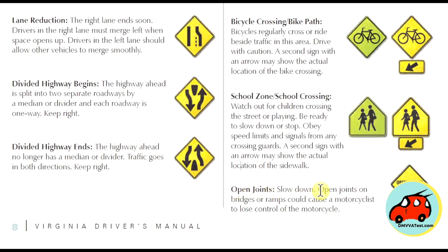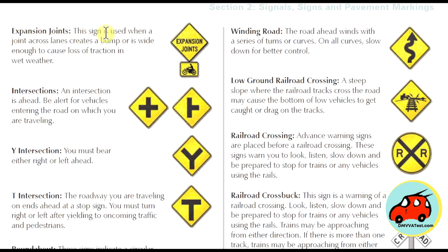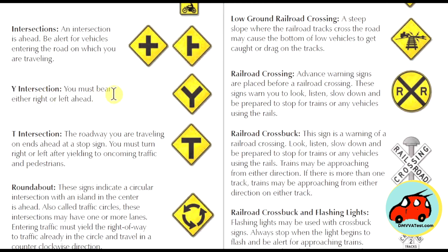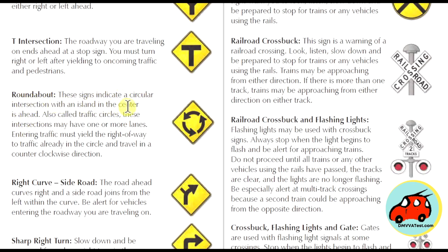Open joint signs warn motorists that open joints on bridges or ramps could cause a motorcyclist to lose control. Expansion joint signs are used when a joint across lanes creates a bump or is wide enough to cause loss of traction in wet weather. Intersection signs alert you to vehicles entering the road on which you're traveling. A Y intersection sign means you must bear right or left ahead. A T intersection sign means the roadway you're traveling ends and you must stop ahead, then turn right or left after yielding to oncoming traffic and pedestrians. A roundabout sign indicates a circular intersection with an island in the center — entering traffic must yield to traffic already in the circle and travel in a counterclockwise direction.